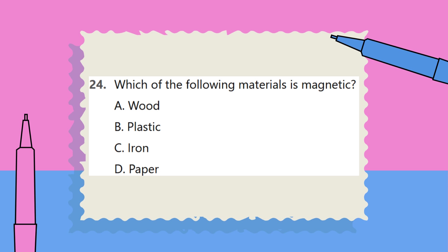Question 24. Which of the following materials is magnetic? A. Wood. B. Plastic. C. Iron. D. Paper.